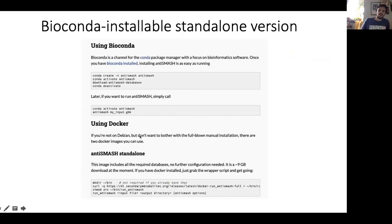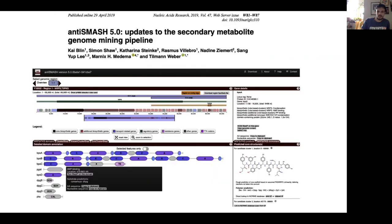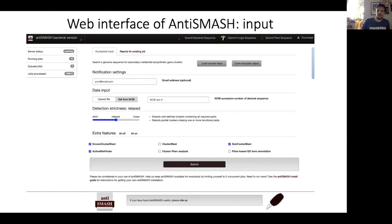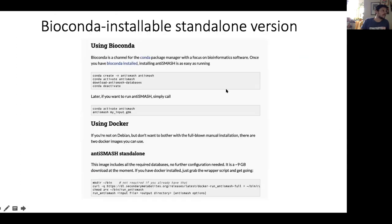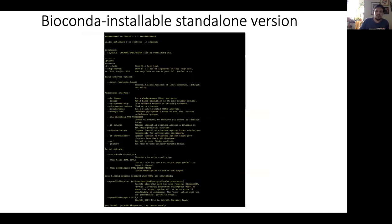If you go back to the antiSMASH page and click Download, then Documentation, it takes you to a page with installation instructions. I went with the bioconda version, and it's really easy to install if you have bioconda set up. You just copy and paste the commands: create a conda environment called antismash, install antiSMASH, activate the environment, and download the antiSMASH databases — basically the Pfam and other databases it uses. Then whenever you're done, you deactivate the environment. There's also sample input shown, and I'll go over the command in the tutorial.